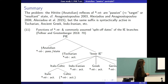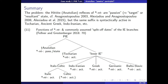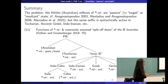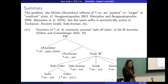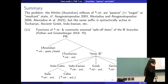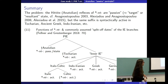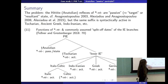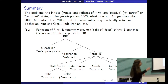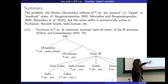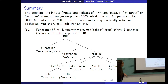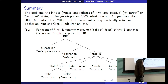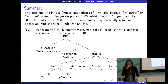The Hittite reflex of -nt- is passive — or more accurately, theme-oriented — while the same suffix is syntactically active in Tocharian, Indo-Iranian, Greek, and others. This tree shows the function of -nt- correlated with the commonly assumed split of dates: everything after Anatolian has something that looks like an active -nt- participle, placing Anatolian as the first branch to split off.